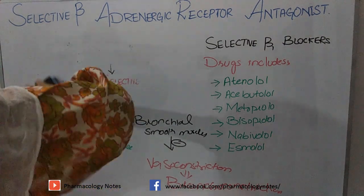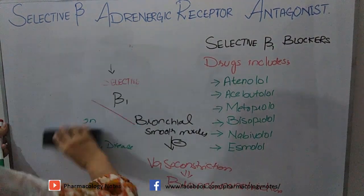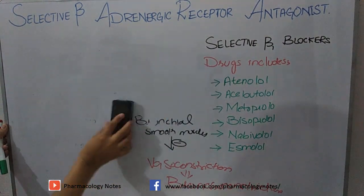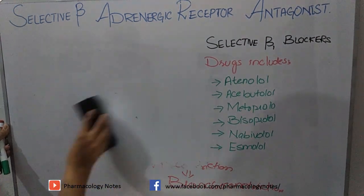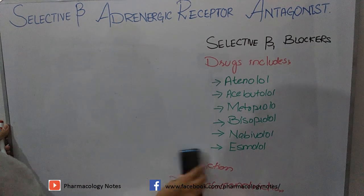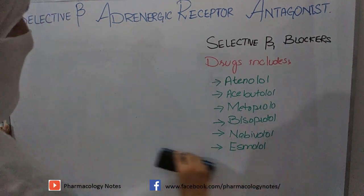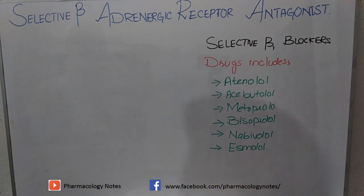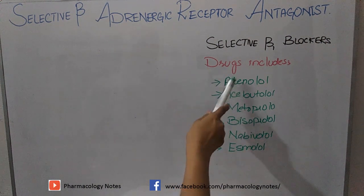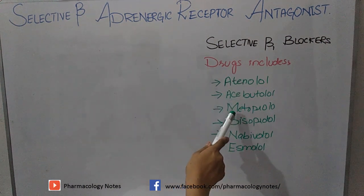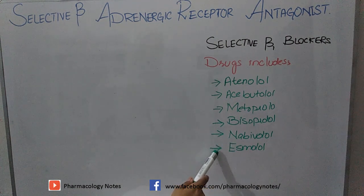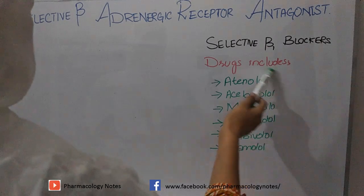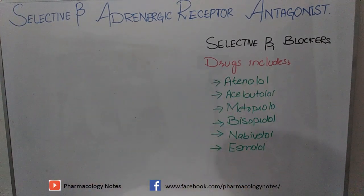The drugs included in the class of selective beta-1 receptor blockers, which have affinity only for beta-1, are atenolol, acebutolol, metoprolol, bisoprolol, nebivolol, and esmolol. These drugs block only beta-1 receptors.